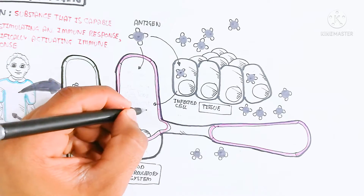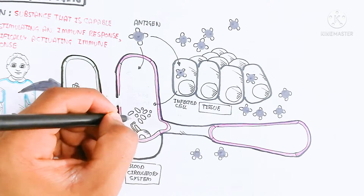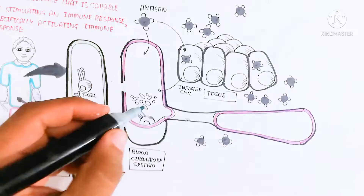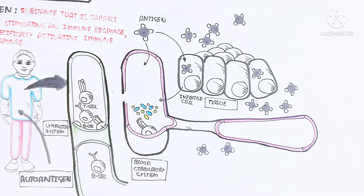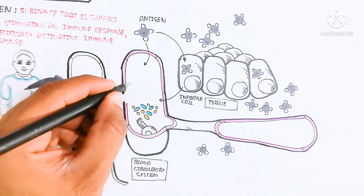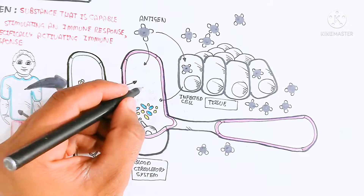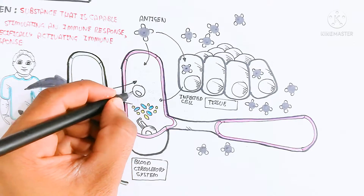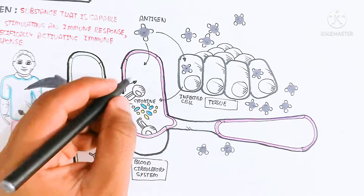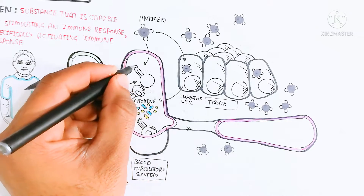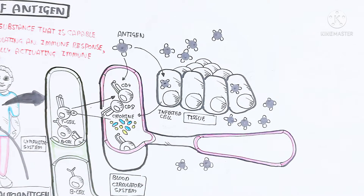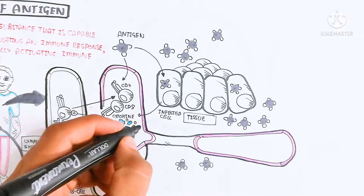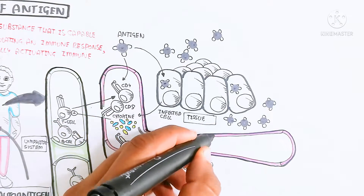The infected cell produces cytokines — inflammatory mediators — as well as tumor necrosis factor (TNF) and interleukins. These cytokines trigger the T cells, and the naïve T cell will proliferate and convert into CD8 and CD4 T cells, along with T regulatory cells which we will discuss later.